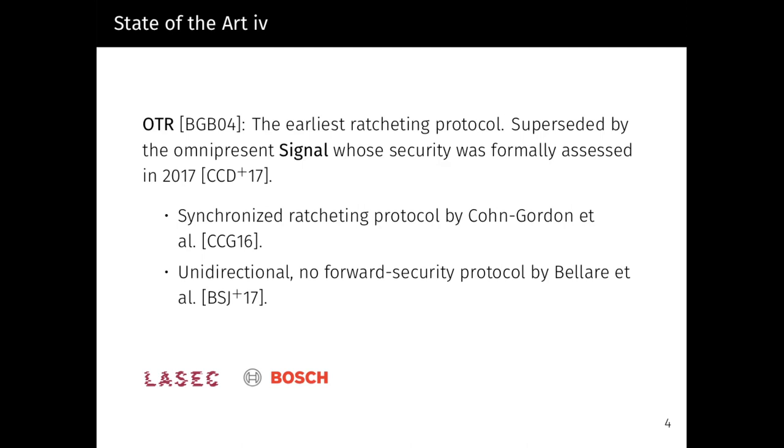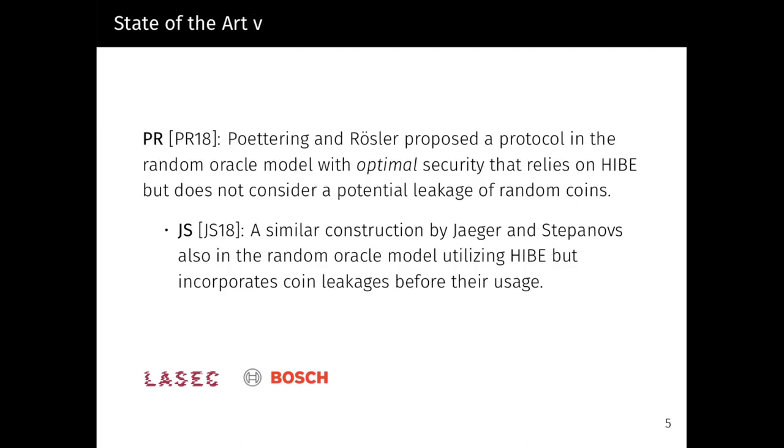OTR, short for off-the-record, was the earliest ratcheting protocol that found real-world application. It is now superseded by the omnipresent Signal construction released in 2013 and among others found in WhatsApp. The security of Signal was only formally analyzed in 2017. The first ratcheting protocol that found its way on the academic stage was a construction by Cohn-Gordon et al. A year later, Bellare et al. proposed a unidirectional protocol with no forward security. At Crypto 2018, Poettering and Rösler came forward with a protocol with optimal security in the sense that no better model is known.